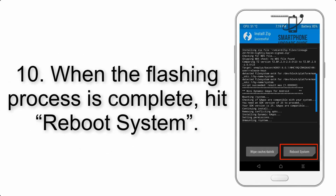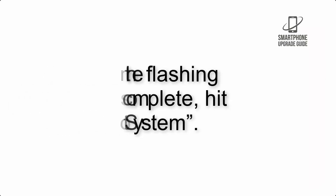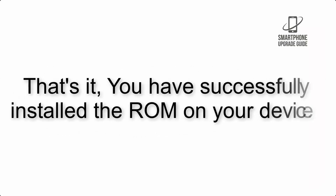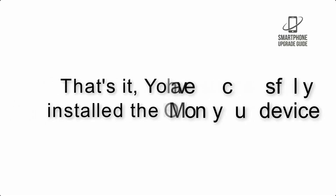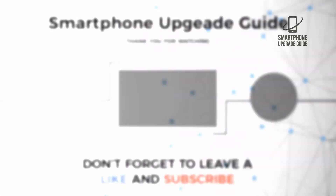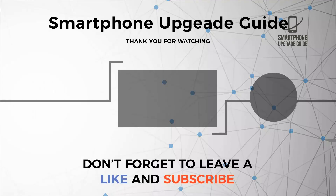Step 10: When the flashing process is complete, hit Reboot System. That's it — you have successfully installed the ROM on your device.